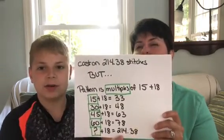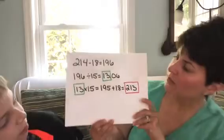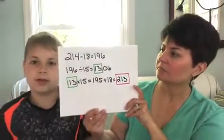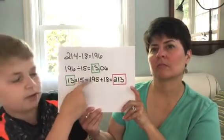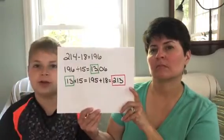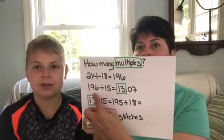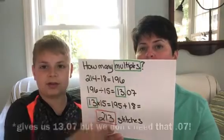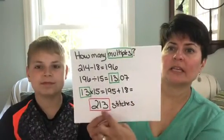So what we did was subtract 18 from 214.38, then divide by 15 — and we got about 13.06 — so we rounded down to 13. Then we took 13 times 15, which is 195, plus 18 gives us 213. To walk through it clearly: 214 minus 18 is 196; 196 divided by 15 gives us 13 multiples; 13 times 15 is 195, plus 18 gives a total of 213 stitches to cast on.